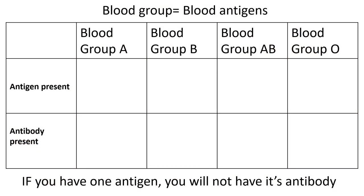Blood grouping is very simple. A person having blood group A will have antigen A. And as antigen A is a self-antigen, this group will not produce antibody for antigen A. For this group, antigen B is a foreign antigen. Thus, they will produce antibodies against antigen B.